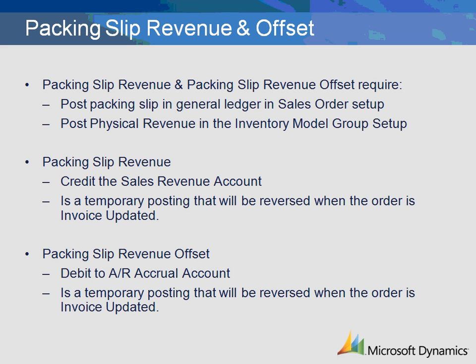The packing slip revenue and packing slip revenue offset transactions are temporary postings and will be reversed when the sales order is invoice updated. Additionally, the packing slip tax transaction will credit a sales tax payable account and add to the accounts receivable accrual. This entry will also be reversed upon sales order update.